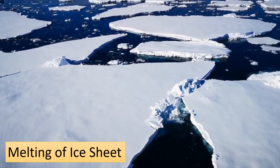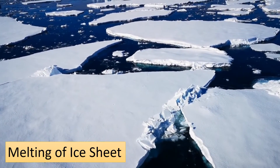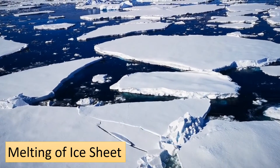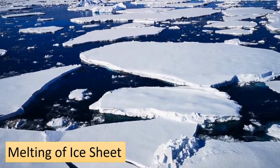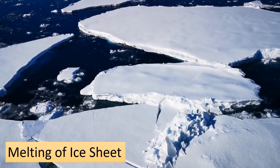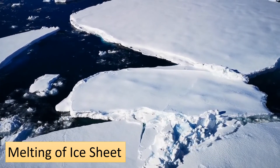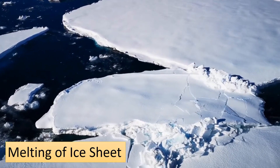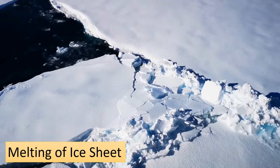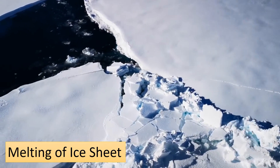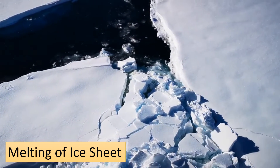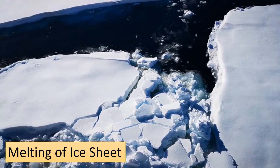The third factor is the melting of ice sheets. The large ice sheets covering Antarctica and Greenland contain vast amounts of fresh water. As global temperatures rise, these ice sheets are experiencing increased melting and ice loss, which has a significant impact on sea level rise.